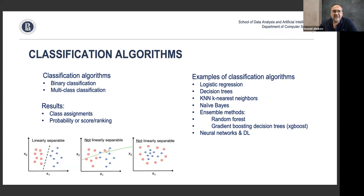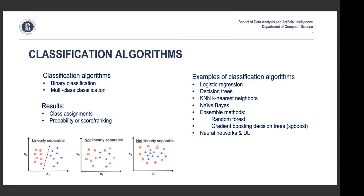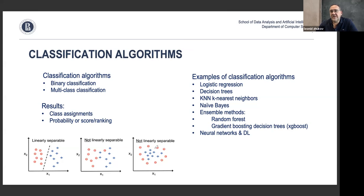In the worst case, separating the two classes requires a curved boundary, not a straight line, so a linear model won't work. Depending on the data, you'll need to use different types of models to achieve good classification. There exist many classification algorithms.